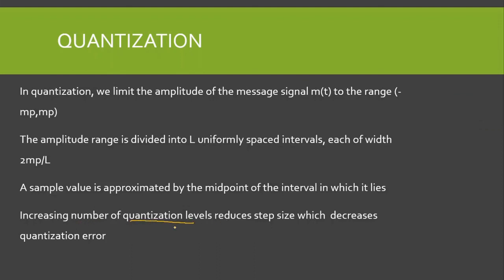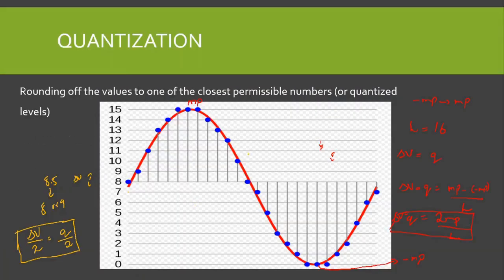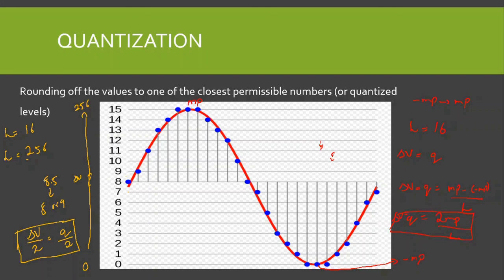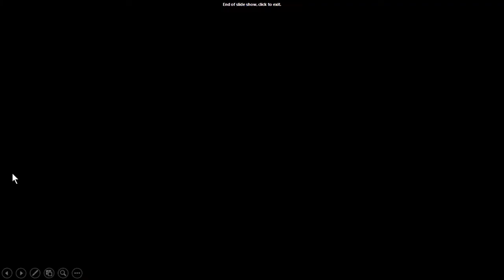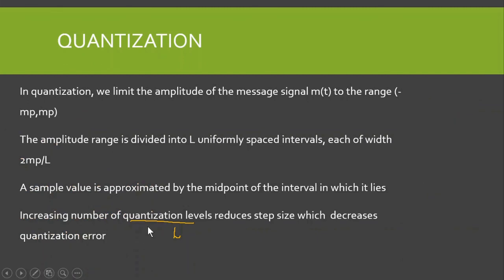Increasing the number of quantization levels L reduces the step size, which in turn reduces the quantization error. For example, with L = 16, if we increase L to 256, the step size decreases. The quantization error is still delta_v / 2, but since delta_v is now smaller, the error is reduced. So increasing the number of quantization levels decreases the step size and decreases the quantization error.